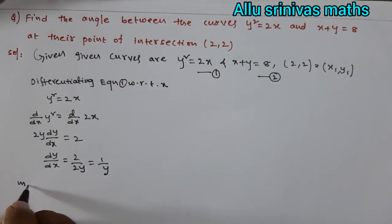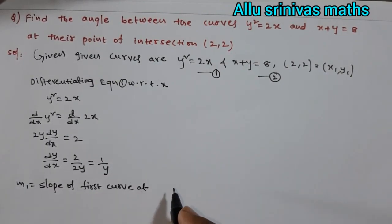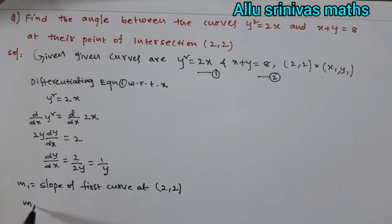Next where m₁ is slope of first curve y² = 2x at (2, 2). So m₁ = dy/dx at point (2, 2).